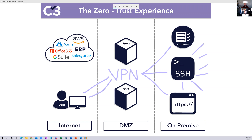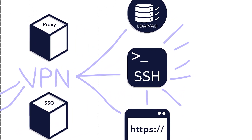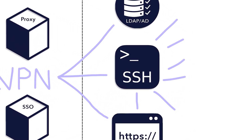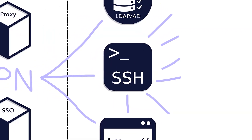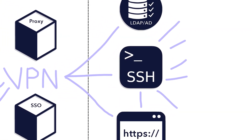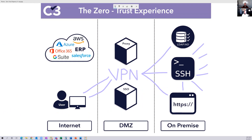Whether it's a corporate-owned device or a BYOD — bring your own device — whatever is on that endpoint has free reign to laterally move throughout the network. And that's just a huge vector for things like ransomware, malware, key loggers, all sorts of malicious things to get into your network and wreak havoc.